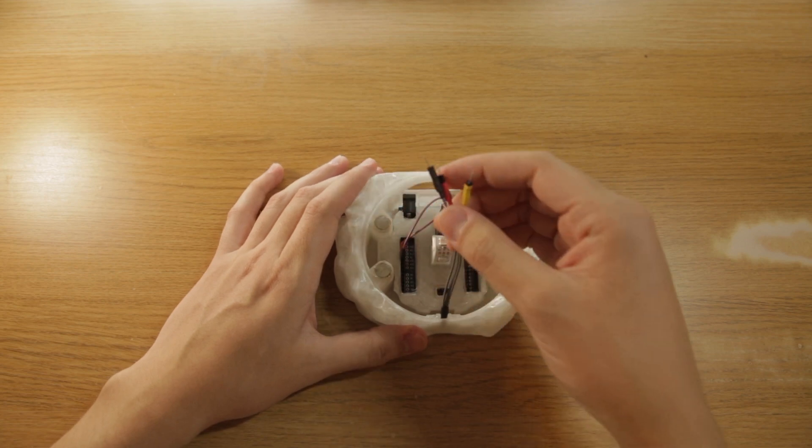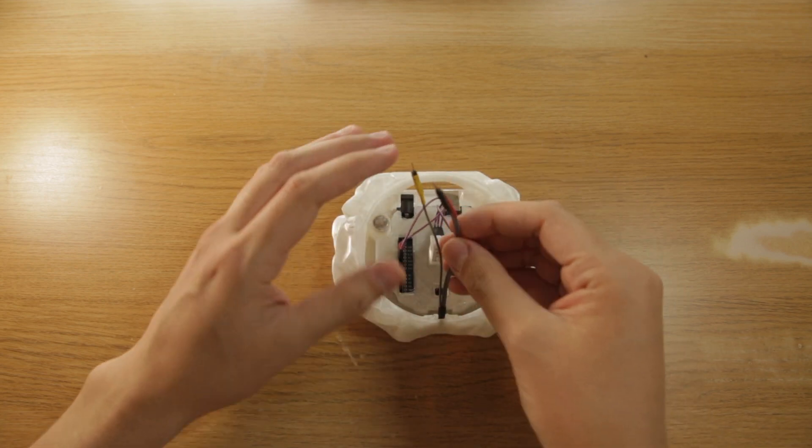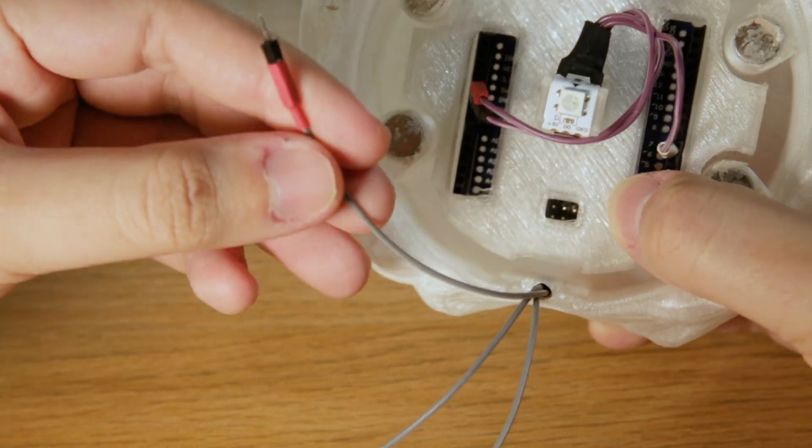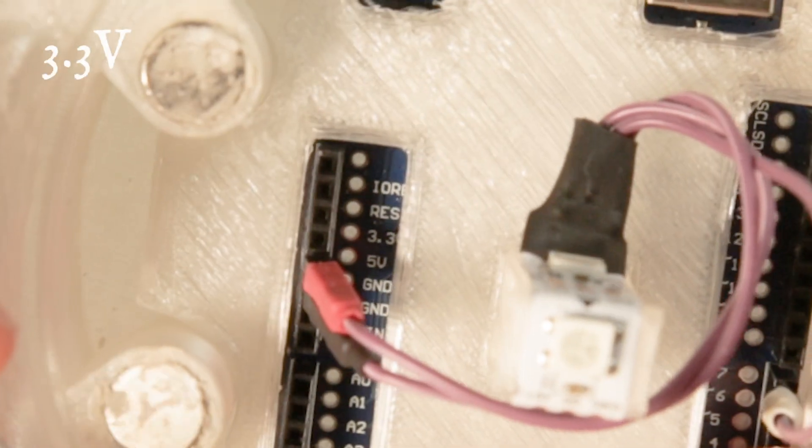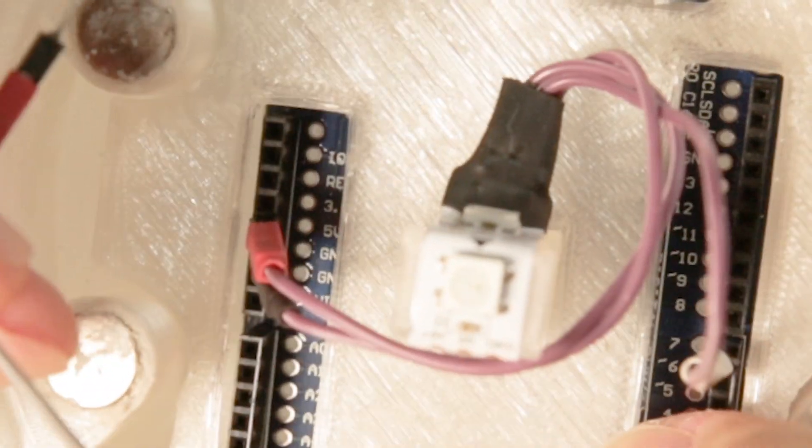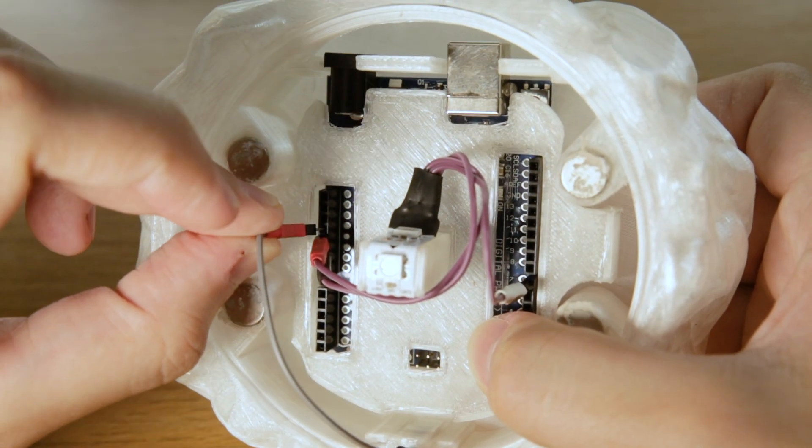Now we are going to plug these wires into the controller as well. Once again, first one red providing power that will go into the port marked 3.3V, 3.3 volts. That's how much power we're going to be supplying to the sensor.